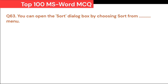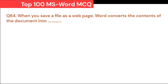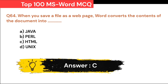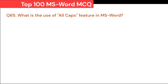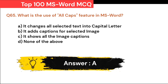You can open the Sort dialog box by choosing Sort from the Dash menu: A. View. B. Format. C. Tools. D. Data. Correct answer is D. Data. When you save a file as a web page, Word converts the contents of the document into: A. Java. B. Perl. C. HTML. D. Unix. Correct answer is C. HTML. What is the use of the All Caps feature in MS Word? A. It changes all selected text into capital letters. B. It adds captions for selected images. C. It shows all image captions. D. None of the above. Correct answer is A. It changes all selected text into capital letters.